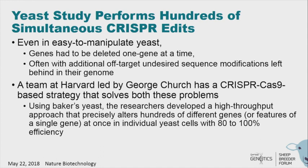You'll hear that the early technology was hard because you could only do one gene at a time and there were a lot of off-target hits — you'd change parts of the genome you didn't want to change. But there's a lot of new stuff coming. In a May 2022 Nature Biotechnology paper, a group at Harvard described a high-throughput system in yeast where they can alter hundreds of different genes in the exact same meiosis — not just one gene edit, but hundreds, with 80 to 100% efficiency.